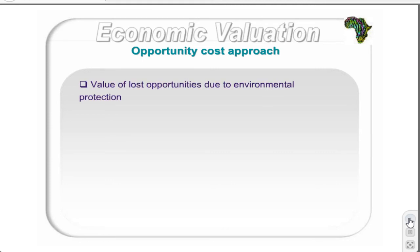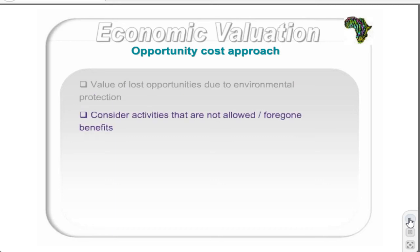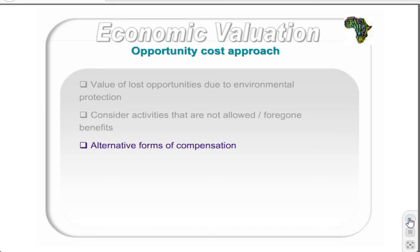The opportunity cost method looks at the value of lost opportunities due to environmental protection. In other words, if land were to be conserved, the same land is no longer available for agriculture or other economic activities. The method measures the foregone opportunities of those that are now explicitly not allowed. There may also be a need to consider alternative forms of compensation, especially where rural or vulnerable communities are negatively impacted.